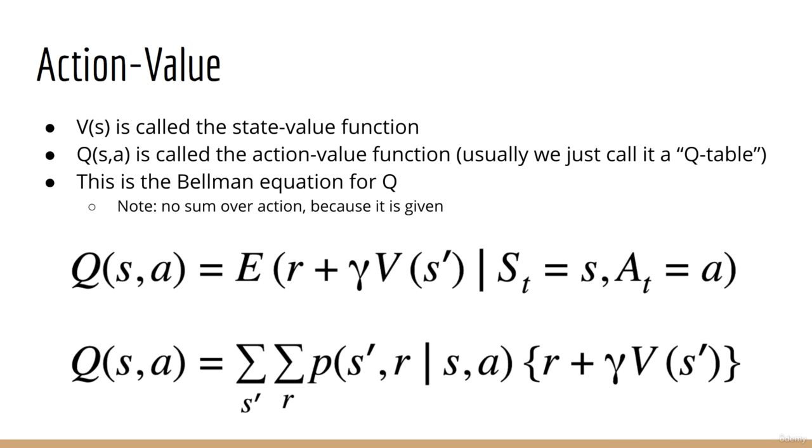There is another quantity, known as the action value function, where the value depends both on the state s and the action a. We denote it with the symbol q. As you can see, it has almost the same definition of v, except that it's also conditioned on the action a. And so, in the Bellman equation, since a is given, we do not sum over the policy distribution.